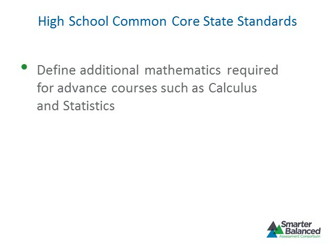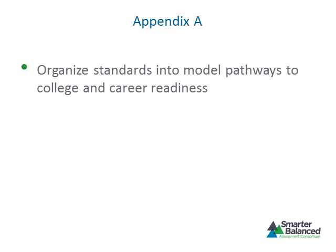The high school Common Core State Standards for mathematics include additional mathematics that students should learn prior to taking advanced courses, such as calculus or statistics. These standards are designated with a plus symbol. Appendix A of the Common Core State Standards for mathematics may provide additional background information for item and task writers. The focus of Appendix A is on organizing the standards for mathematical content into model pathways to college and career readiness. With this understanding of the structure of the standards for high school, let's shift our focus to the claims and assessment targets that will guide the development of items and tasks for high school.